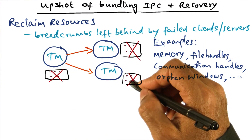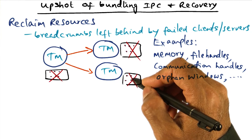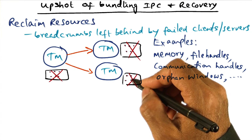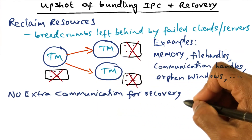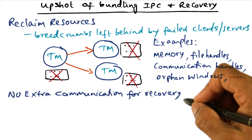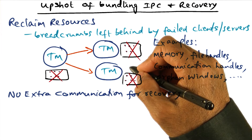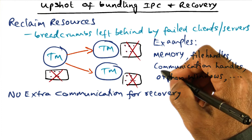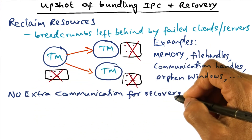The fact that you have a transaction tree that records the trail of all the nodes that were touched and the temporary states that were created on all these nodes allows these breadcrumbs to be cleanly reclaimed. And there is no extra communication for the recovery management itself, because whatever communication is needed for the transaction managers to talk to one another in participating in the transaction that is shadowing the IPC actually rides on the IPC itself, and therefore it comes for free.